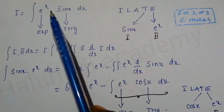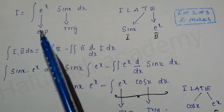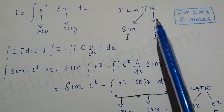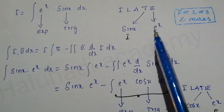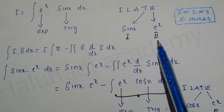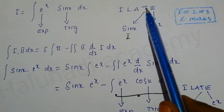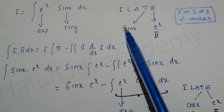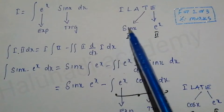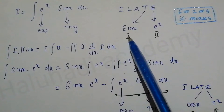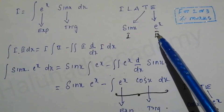e^x is an exponential function and sin x is a trigonometric function. According to ILATE, trigonometric comes before exponential, so the first function is sin x and the second function is e^x.